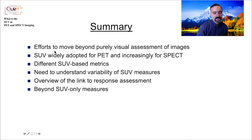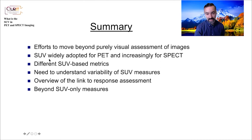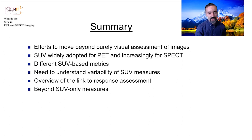To summarize this presentation: there have been efforts to move beyond purely visual assessment of images, and SUV is what allowed us to move beyond purely visual assessment. It has been widely adopted for PET and increasingly for SPECT. We talked about different kinds of SUV-based metrics — SUV max, peak, and mean — and the need to understand variability of SUV measures. We tried to link this variability to existing criteria for response assessment, and finally we talked about three areas where we can move beyond SUV-only measures: kinetic modeling, volumetric measures, and radiomics.